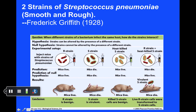A rough strain, shown here with red cells, and a smooth strain, also with red cells, but surrounded by a gelatinous smooth sheath composed of various polysaccharides. Notice that if a rough strain is injected into a mouse, the mouse lives—he might get sick, but he lives. If a smooth strain is injected into a mouse, the mouse dies. So even though they are the same species of bacterium, these different strains give radically different results when injected into mice.